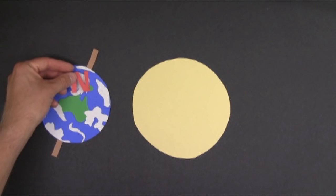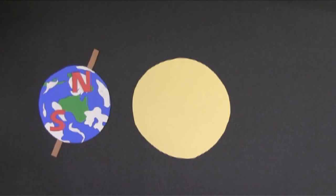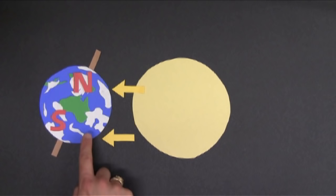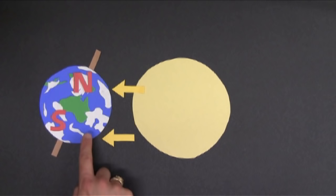So when the Earth is over here, the Northern Hemisphere is angled towards the Sun, and the Southern Hemisphere is angled away. When a Hemisphere is angled towards the Sun, the Sun's rays hit it directly. That's what's happening in the Northern Hemisphere here. But when a Hemisphere is angled away from the Sun, like the Southern Hemisphere here, the Sun's rays hit it indirectly.